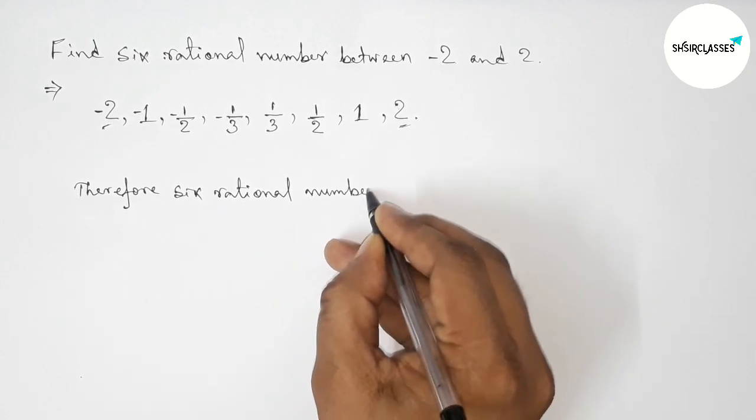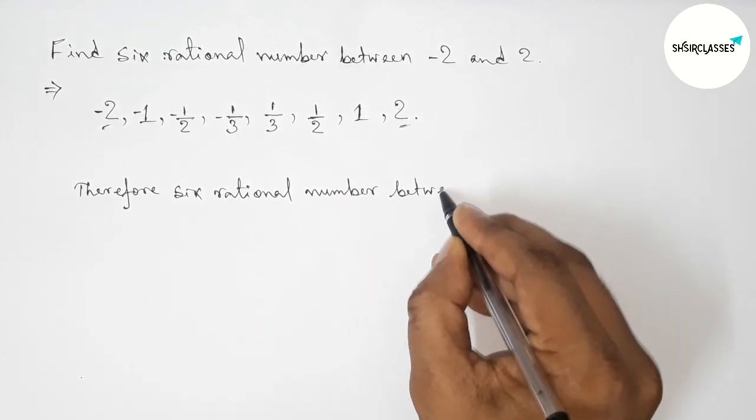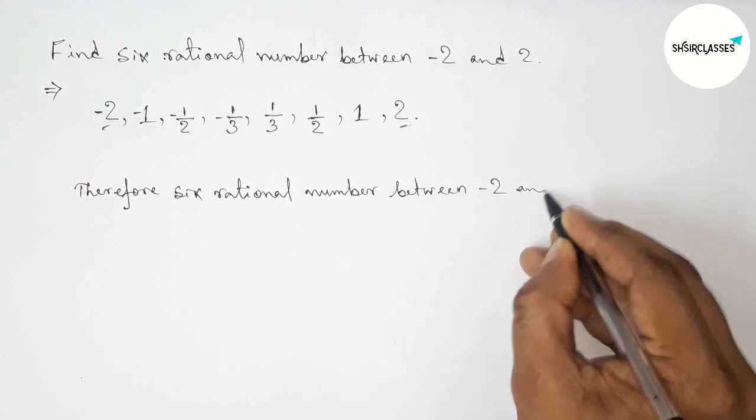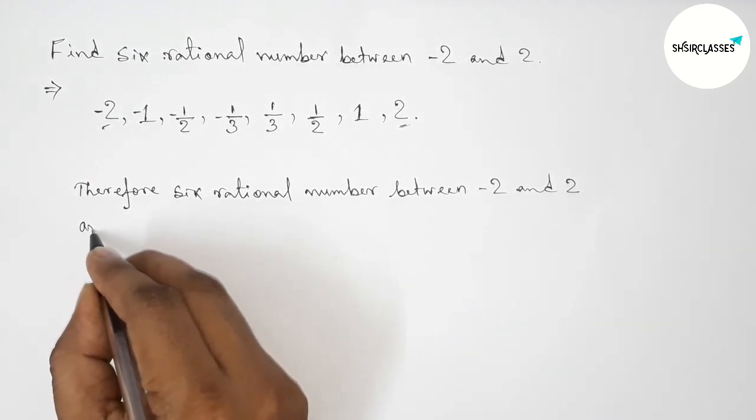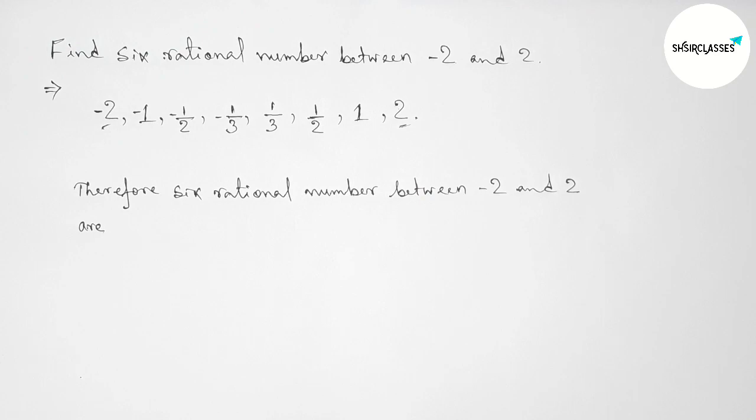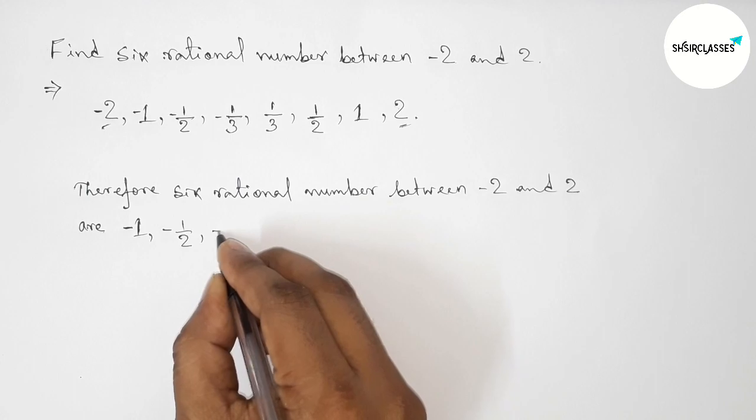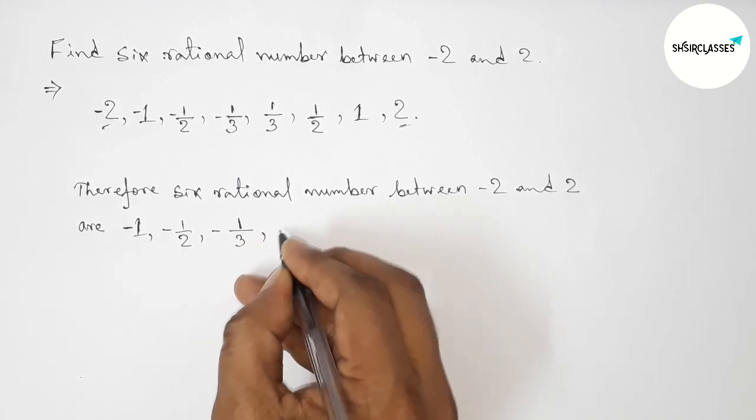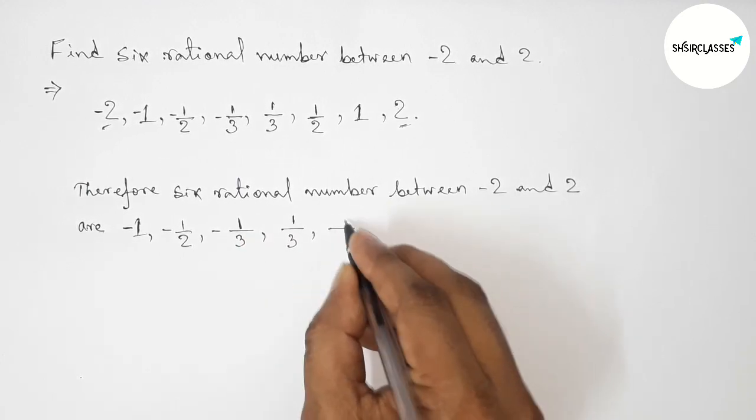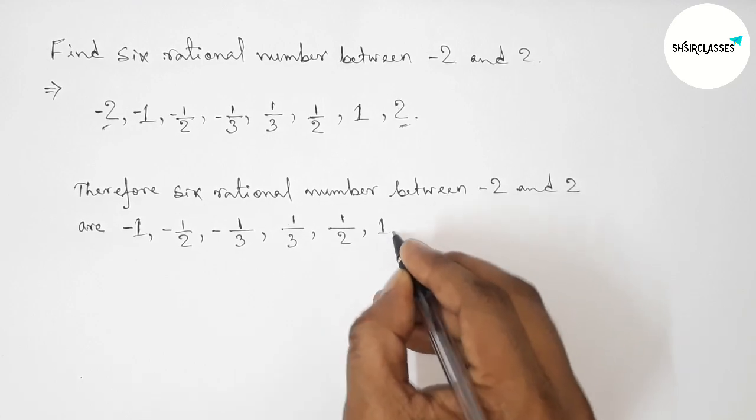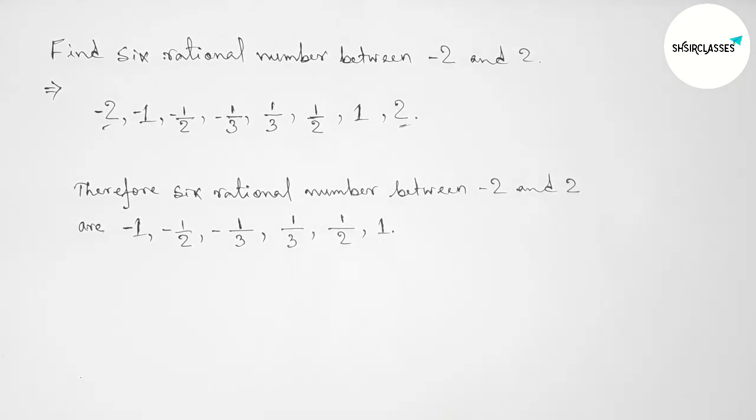Six rational numbers between minus two and two are: the first one is minus one, then minus one by two, then minus one by three, then one by three, one by two, and one. So that's all.